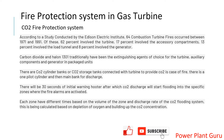There is a study from the Edison Electric Institute showing the probability of fire in different compartments: 62 percent of fires occur in the turbine compartment, 17 percent in the accessory compartment, 13 percent in the load tunnel, and 8 percent in the generator. The turbine zone is the most probable fire area, due to high temperatures and fuel presence.